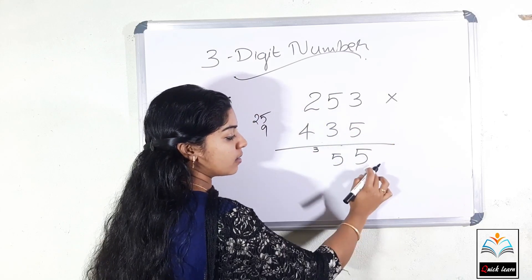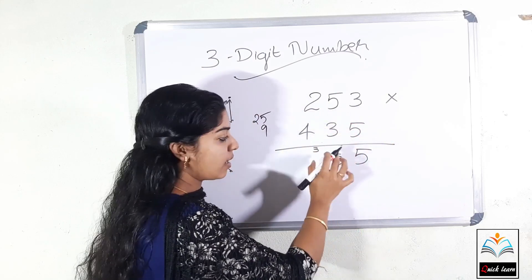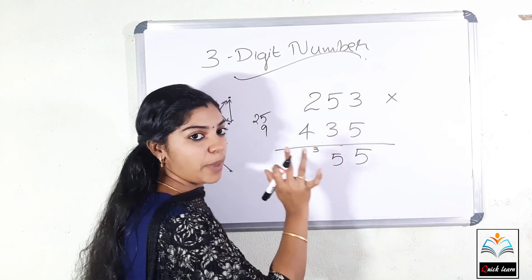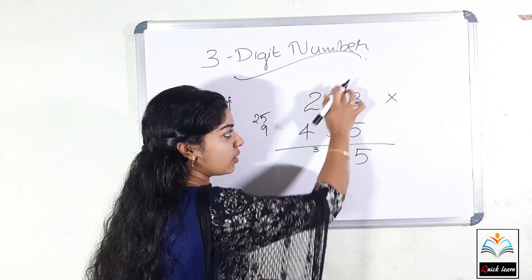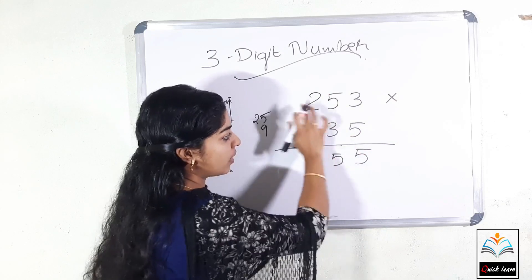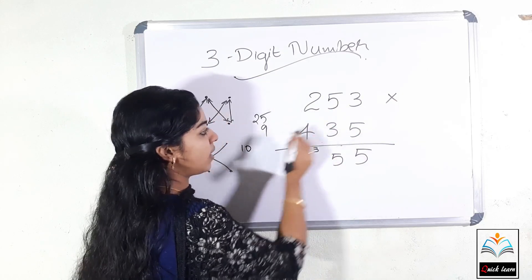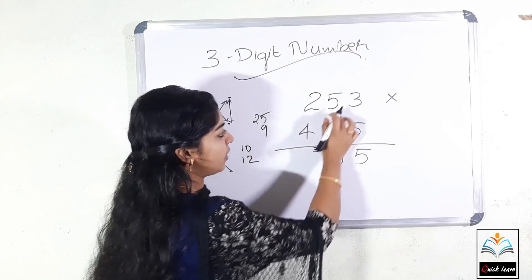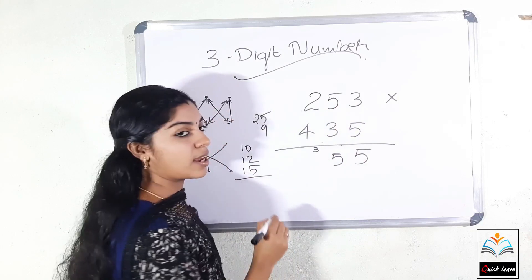First, we add a cross-multiple — this is the main step. We add a cross-multiple, we add a cross-multiple, we add a cross-multiple.